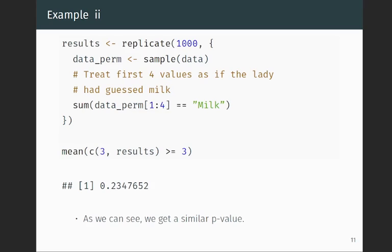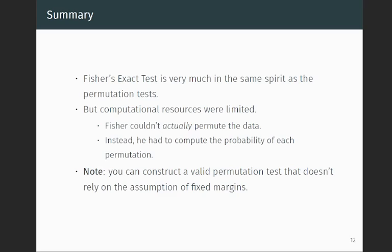The idea behind Fisher's exact test is very much in the same spirit as the permutations. We're looking at the frequency or the proportion of all of the different configurations that are possible that would have given rise to the table we saw under the null hypothesis. But of course, in Fisher's time, the computational resources were limited. So he wasn't really thinking in terms of generating those permutations.